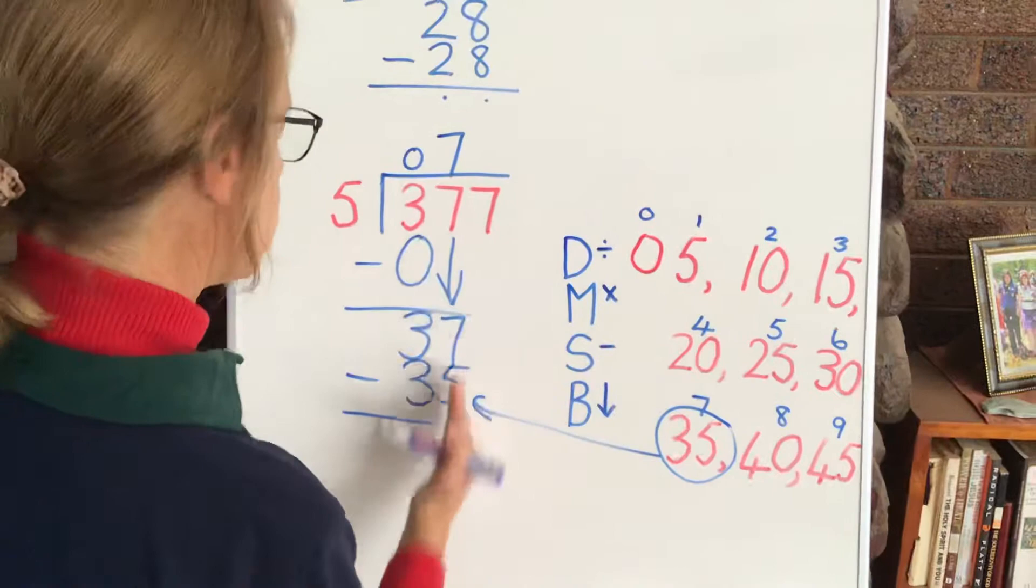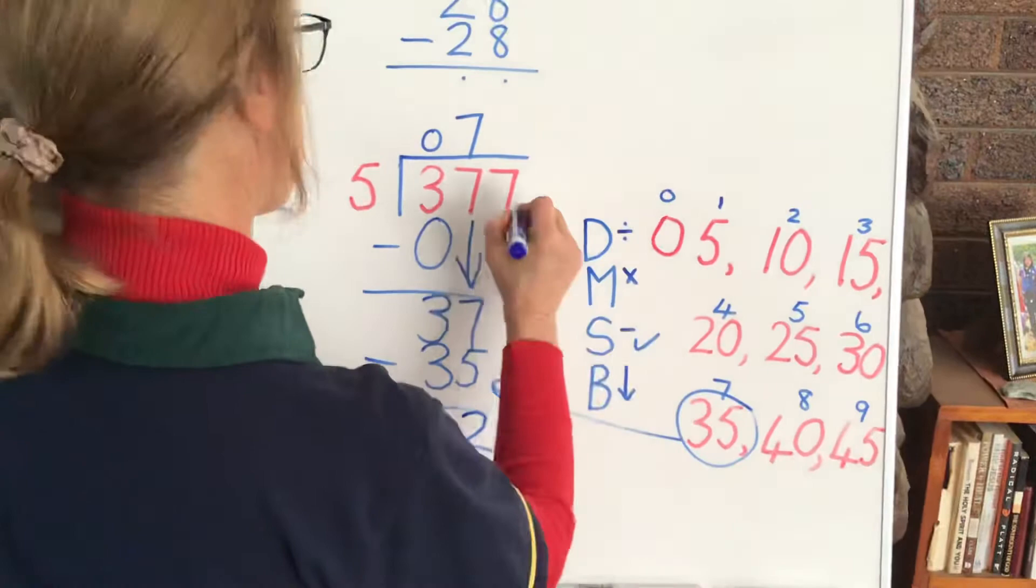7 minus 5. Units first. 7 minus 5 is 2. 3 minus 3 is nothing.